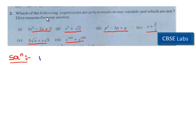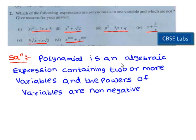In this question we need to find which of the following expressions are polynomials in one variable and which are not. So we need to know the definition of polynomial. Polynomial is an algebraic expression containing two or more variables and the powers of variables are non-negative.